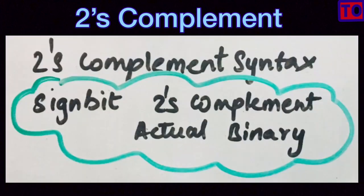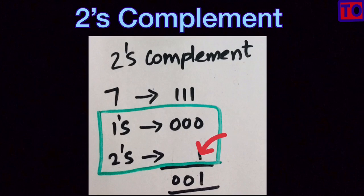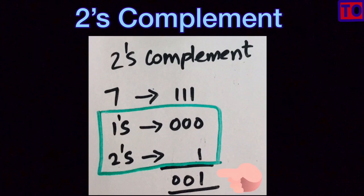Now let's look at Two's Complement. The actual binary of 7 is 111. The One's Complement of 111 is 000. Two's Complement is One's Complement plus 1. So the Two's Complement of 7 is 000 plus 1, which gives 001. Similarly for 8: the One's Complement is found, then 1 is added to get the Two's Complement.